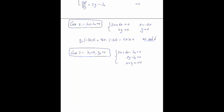For Case 2, with lambda 1 equals zero and g2 equals zero, we solve the partial derivative conditions. Lambda 2 equals 2x plus 60, and lambda 2 also equals 2y. So from here, 2x plus 60 equals 2y, giving y equals x plus 30. And since x plus y equals 120, we get 2x plus 30 equals 120, from which x equals 45 and y equals 75.